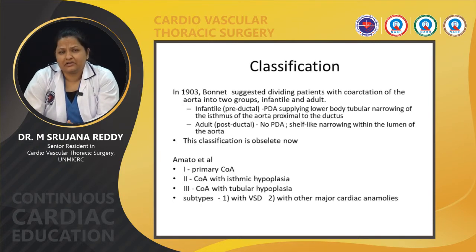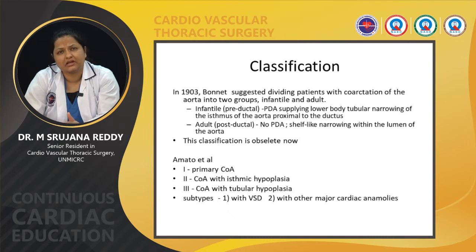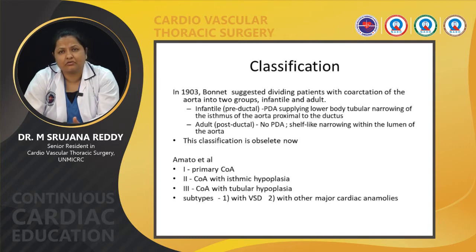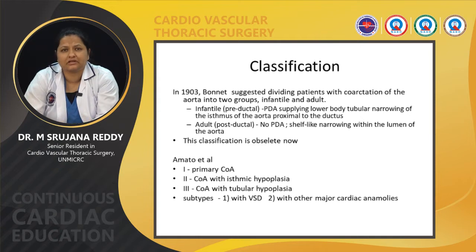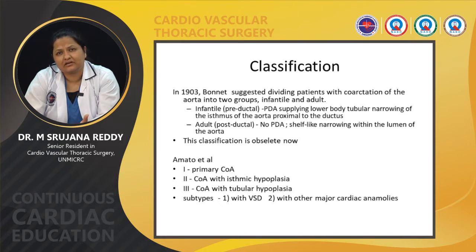Coming to the classification, as already mentioned, in 1903 Bonnet suggested dividing patients into two groups. The infantile group is pre-ductal, has a PDA supplying the lower body, and has tubular narrowing at the isthmus of the aorta proximal to the ductus. The adult group is post-ductal, where there is no PDA but rather a shelf-like narrowing within the lumen of the aorta.